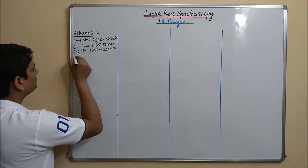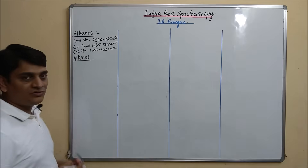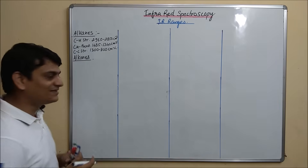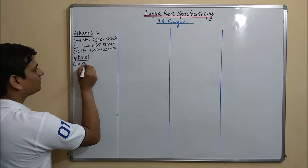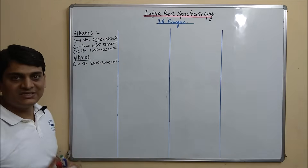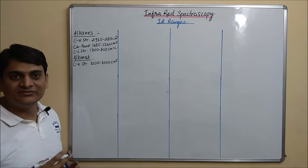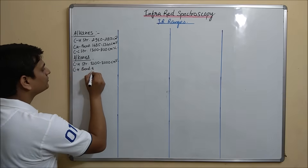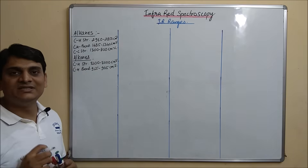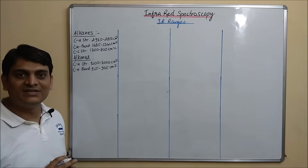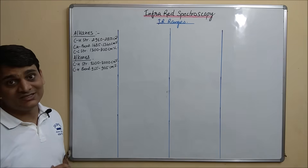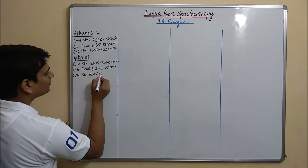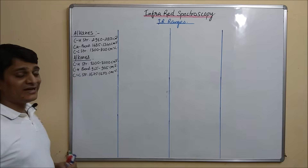Now coming to Alkenes. For CH stretching in Alkenes it is 3100 to 3000 cm inverse. For CH bending it is 915 to 905 cm inverse. For C double bond C stretching it is 1675 to 1650 cm inverse. So these are the IR ranges for Alkenes.